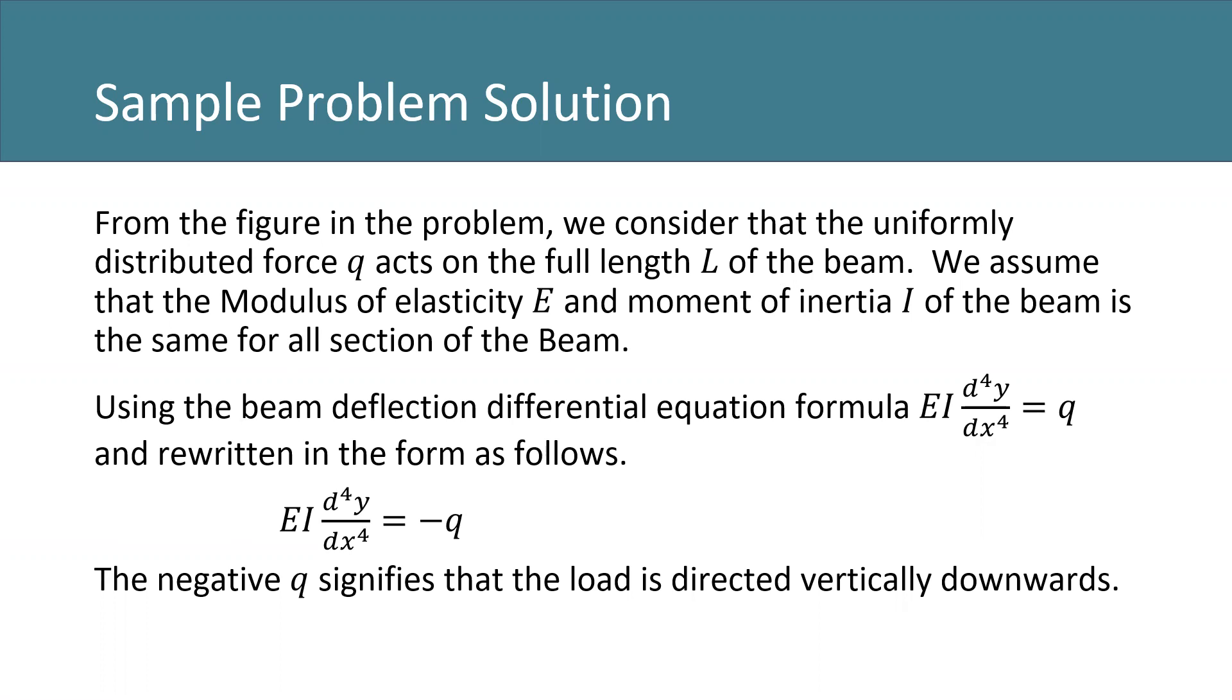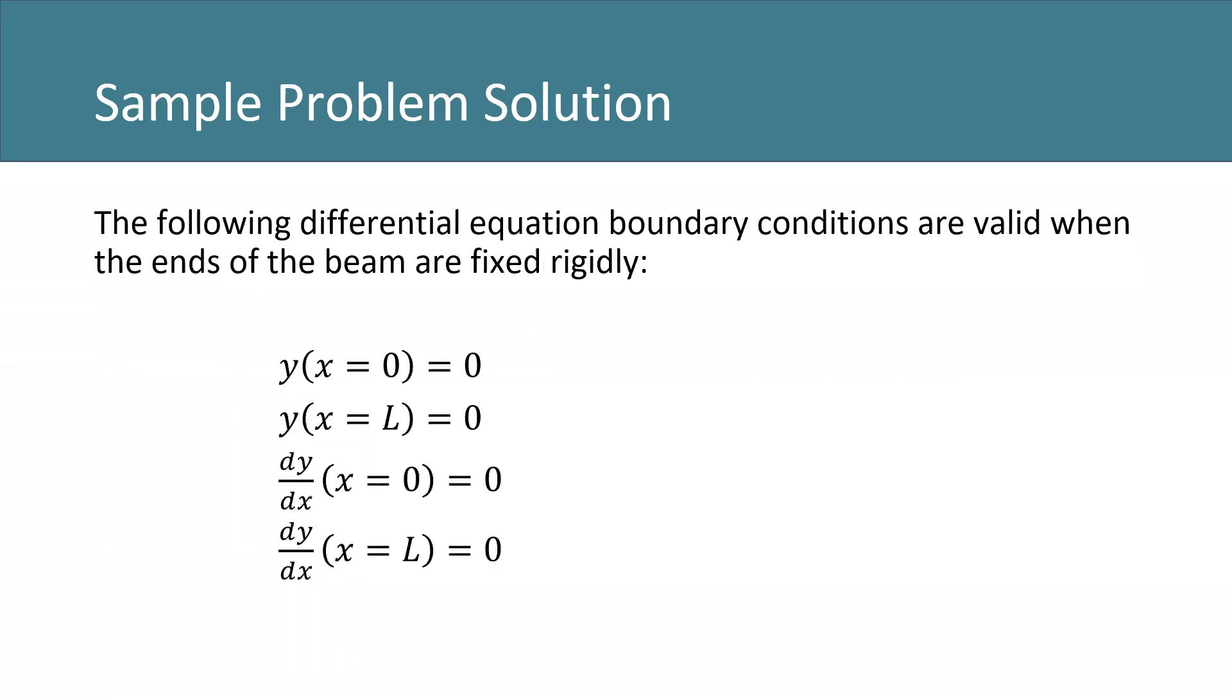And using the beam deflection differential equation formula and rewritten in the form as follows below, the negative Q signifies that the load is directed vertically downwards. The following differential equation boundary conditions are valid when the ends of the beam are fixed rigidly.